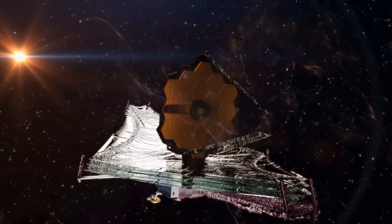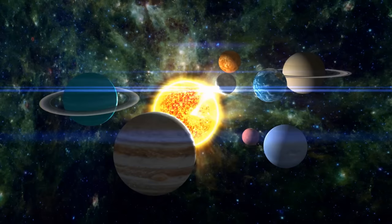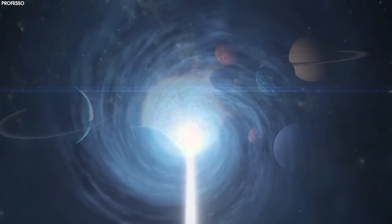The ancient universe was very different than it is today. Some astronomers believe that before our solar system existed, indeed before our galaxy was formed, dark stars were abundant.